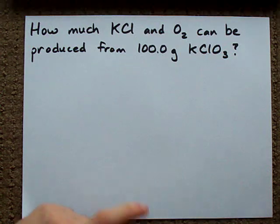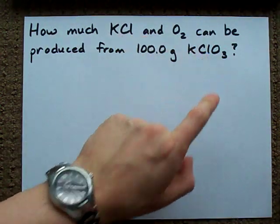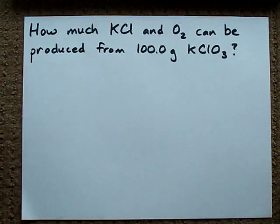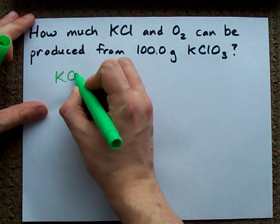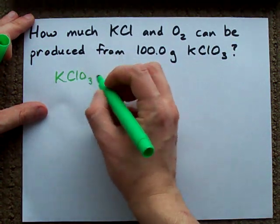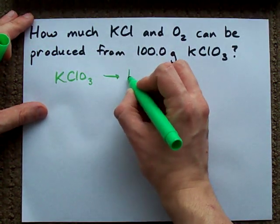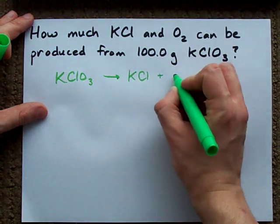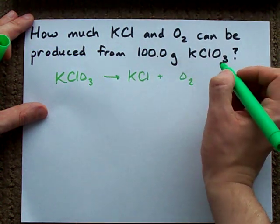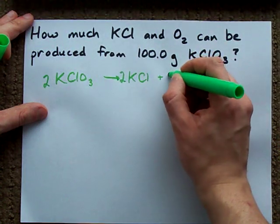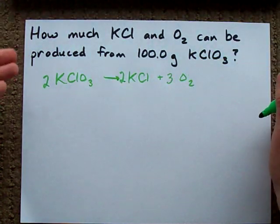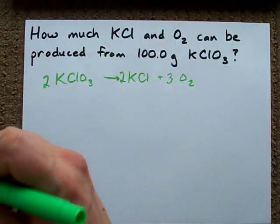Well, if you're asking how much can be produced, you're going to need a balanced chemical equation and you're going to need to convert to moles. The balanced chemical equation in this case is potassium chlorate decomposing into potassium chloride and oxygen. But to balance it, we need 2s in front of each of these and we need a 3 in front of the oxygen. We now have a balanced chemical equation.